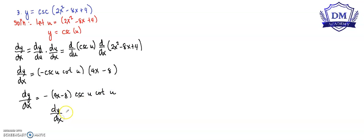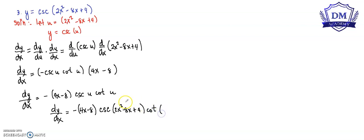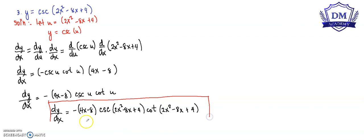So finally, our derivative of y with respect to x is negative (4x minus 8) times cosecant of (2x squared minus 8x plus 4) times cotangent of (2x squared minus 8x plus 4). This is the derivative of y with respect to x. There you go. Thank you for watching.